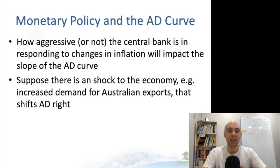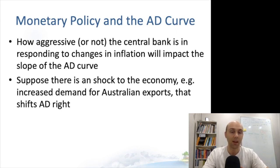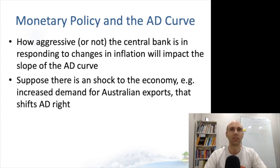Interestingly, how aggressive the RBA is in its monetary policy operations impacts the slope of the AD curve — a strange relationship when you first think about it. We're talking about the responsiveness of the RBA in the money market affecting the shape of the AD curve in our overall economy. We typically think of the AD curve as being affected by consumer demand, firm demand, demand for exports, government spending, and those sort of things. Let's see why it could affect the steepness.